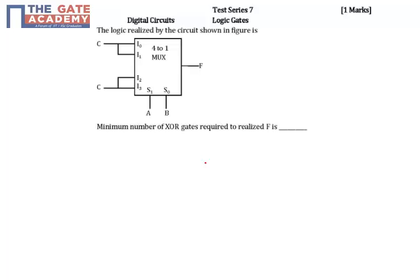If you see, this is a multiplexer. So in a multiplexer, output expression f is equal to s1 bar s0 bar